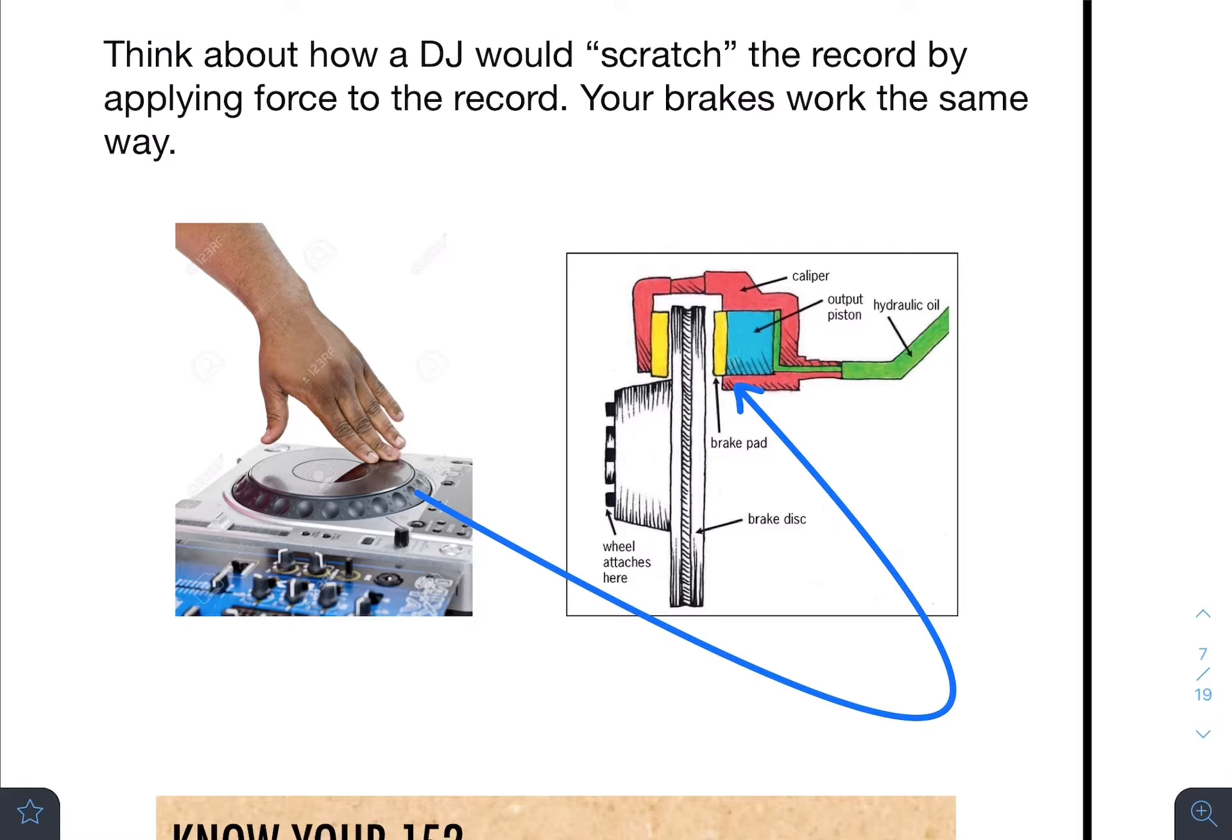However, if you want the spinning to stop, if you want the tire to stop, you are going to make this output piston move over here and via the brake pad, add some additional pressure to the brake disc. Adding enough pressure or a sufficient amount of pressure will make the whole disc stop. And essentially, that's how the brakes work.